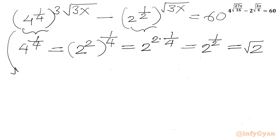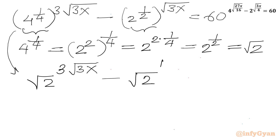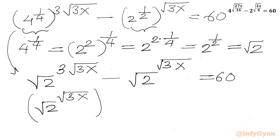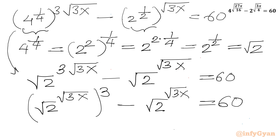We can now rewrite our equation with the common base as square root 2. So it becomes: square root 2 raised to the power 3 times square root 3x, minus square root 2 raised to the power square root 3x, equal to 60. Using the same exponential property, I can write square root 2 raised to the power square root 3x, whole cubed, minus square root 2 raised to the power square root 3x, equal to 60. Now it is substitution time — let a equal square root 2 raised to the power square root 3x, so the first term becomes a cubed and the second term is a.